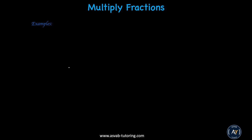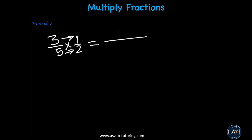Now let's move to multiplication. The most important thing for multiplication is knowing your times table — make sure you know it. Let's start with a simple problem: 3 fifths times 1 half. To multiply two fractions, multiply straight across — top times top, bottom times bottom. You don't need a common denominator for multiplication or division, only for addition and subtraction. So 3 times 1 is 3, and 5 times 2 is 10 — the answer is 3 over 10.